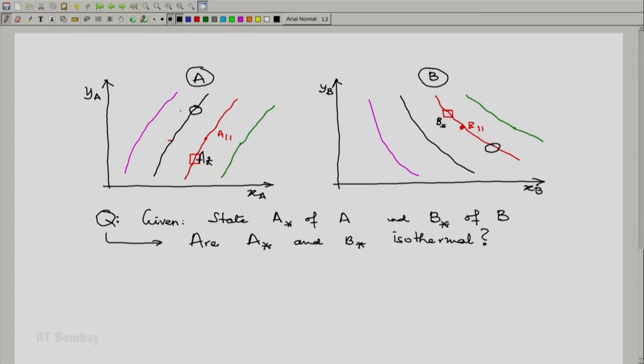here we have one candidate state of system A which is on the black isotherm, but the other system which we are checking is on the red isotherm of B, then they are not on the corresponding isotherms and hence the two are not isothermal.